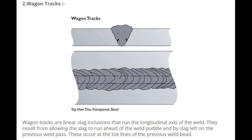Number 2: Wagon tracks. Wagon tracks are linear slag inclusions that run along the longitudinal axis of the weld. They result from allowing the slag to run ahead of the weld puddle and from slag left on the previous weld pass. These occur at the toe lines of the previous weld bead.